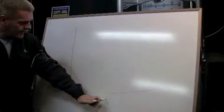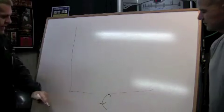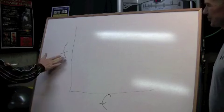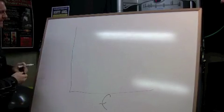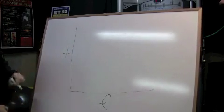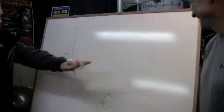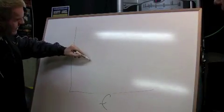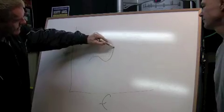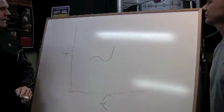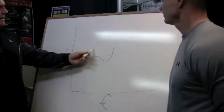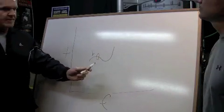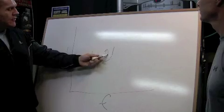Here's our basic graph. If I put a little F down here and a little T over here, what we're talking about is the strength curve. Basically, the strength curve in any textbook shows an eccentric emphasis, transitioning to a static or transition emphasis, and then into a concentric emphasis.